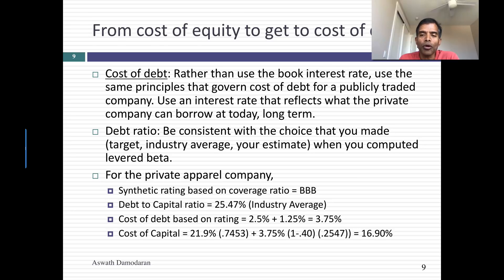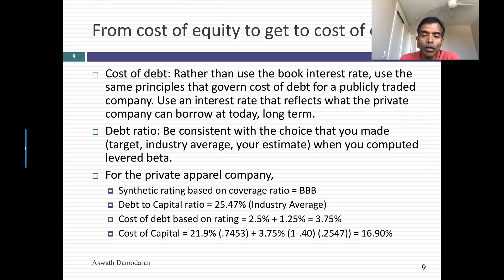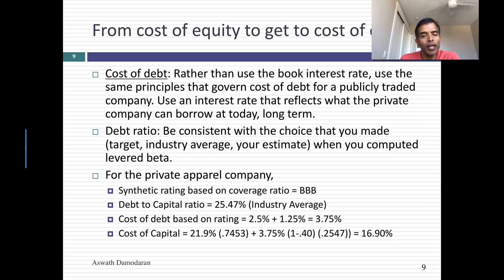Remember, if the private business owner is partially diversified, this penalty decreases because I'll use a lower beta. But this is the process to get to a cost of equity and cost of capital for a private business. If you're wondering where to get correlations of companies in different businesses with the market, on my website I have a total beta dataset where you can look up the total beta by sector — computed by looking at the market beta and the correlation of companies in that sector with the market. Good luck, and thank you very much for listening.